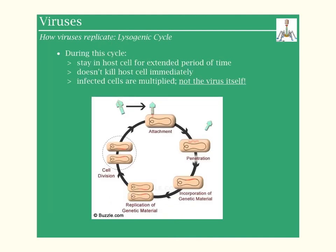Next up, we have the lysogenic cycle. This one is a little different. During this cycle, the virus can actually stay in the host cell for an extended period of time — an incubating period, meaning you could be exposed to the virus today and might not see symptoms until a week, a month, sometimes even a year. It doesn't kill the host cell immediately, but it essentially creates an infected cell and multiplies that cell, not the virus.